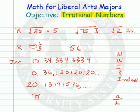0.36, 1, 2, 0, 1, 2, 0 — here is a block that repeats. Rational number.